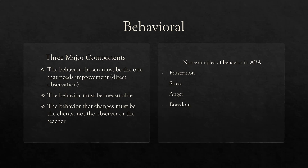Two, the behavior must be measurable. We need to be able to measure it reliably to change it reliably. Three, the behavior that changes must be the client's — not the observer's, not the teacher's, not the parents'. The environment affects our behavior and leads to changes in it. When we change a behavior, we need to ensure the thing that's changing is the behavior of interest — not how we're handling the child, not how the parent or teacher is handling the child. So: behavioral means observable, measurable, and targeting the client.